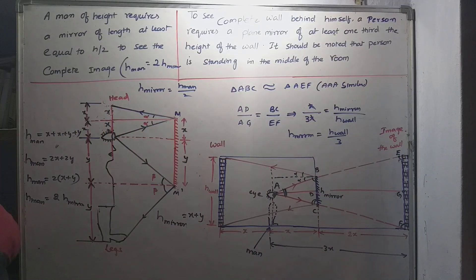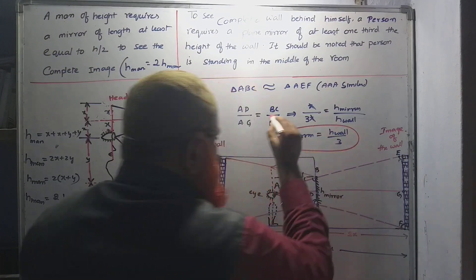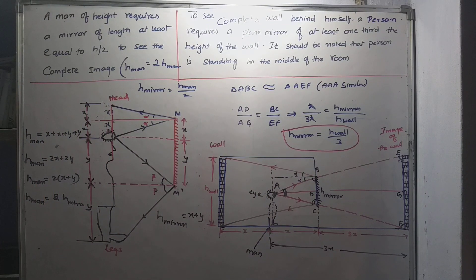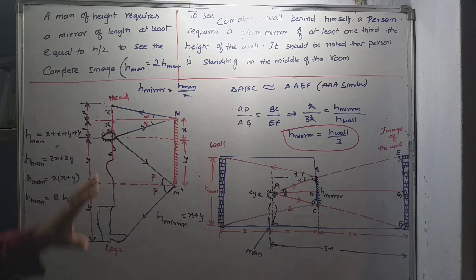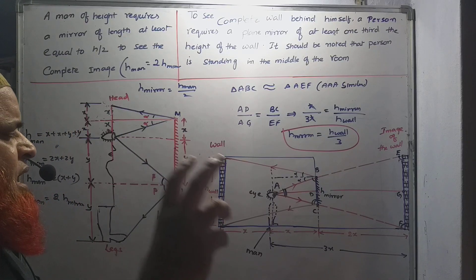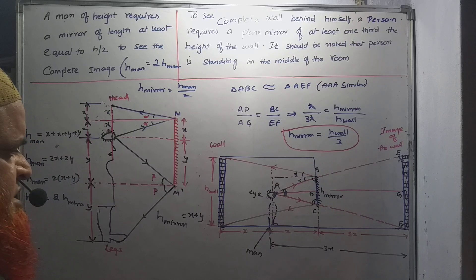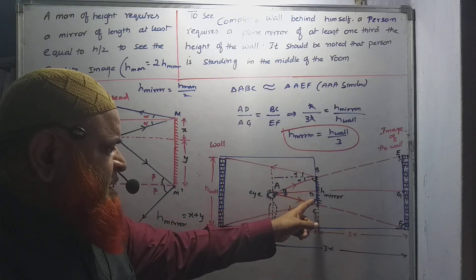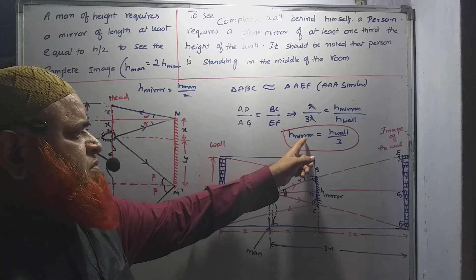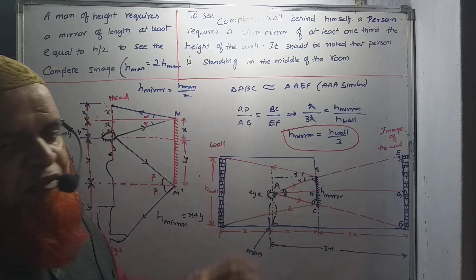I have proved this concept very easily using the diagram. The first concept is that the mirror placed before you should be half your size — if you are 6 feet, the mirror should be at least 3 feet; if you are 5 feet, the mirror should be 2.5 feet. In the second case, the height of the mirror should be one-third of the height of the wall for a person standing at the middle of the room to see the complete wall.